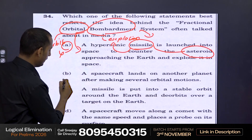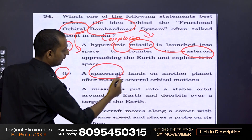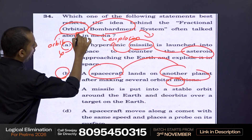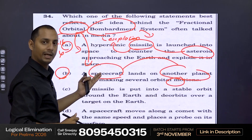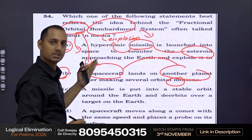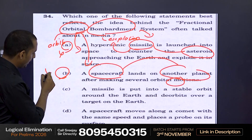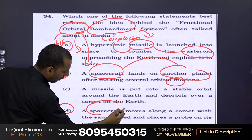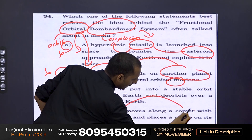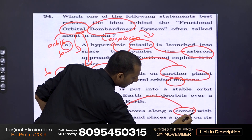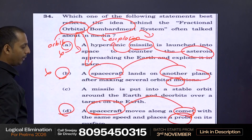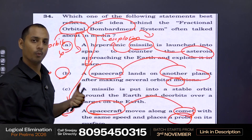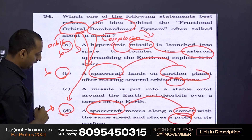The second option deals with a spacecraft landing on another planet with an orbit, but even though orbit is there, does this option have any bombardment or explosion? No. Therefore, you can eliminate this option as well. Now option D talks about a spacecraft which probes another comet with an orbit, but does this have any kind of explosion or bombardment? No. Therefore, you can also eliminate option D.